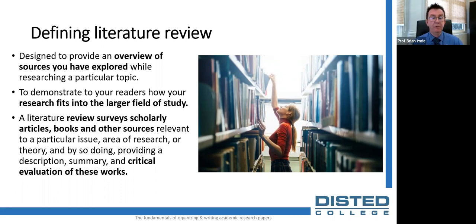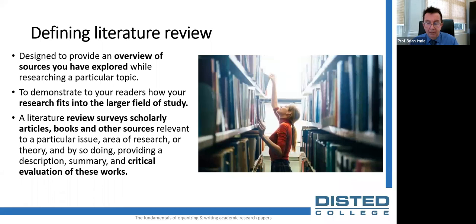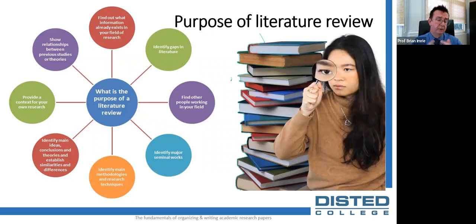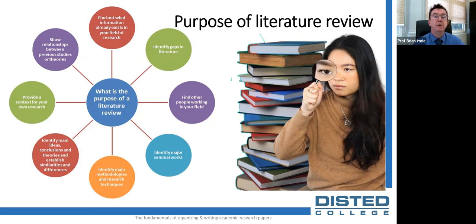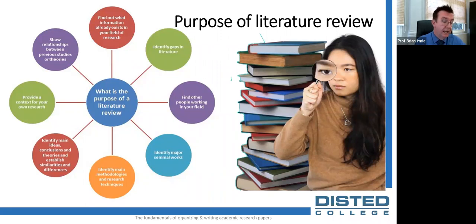There are two main purposes for writing a literature review. The first is to provide an overview of the sources you've explored in terms of creating your research or identifying research gaps. Secondly, to demonstrate to the readers where your research fits in the wider scope of that field of study. This involves looking at a range of scholarly sources — peer-reviewed articles and books — rather than popular literature.